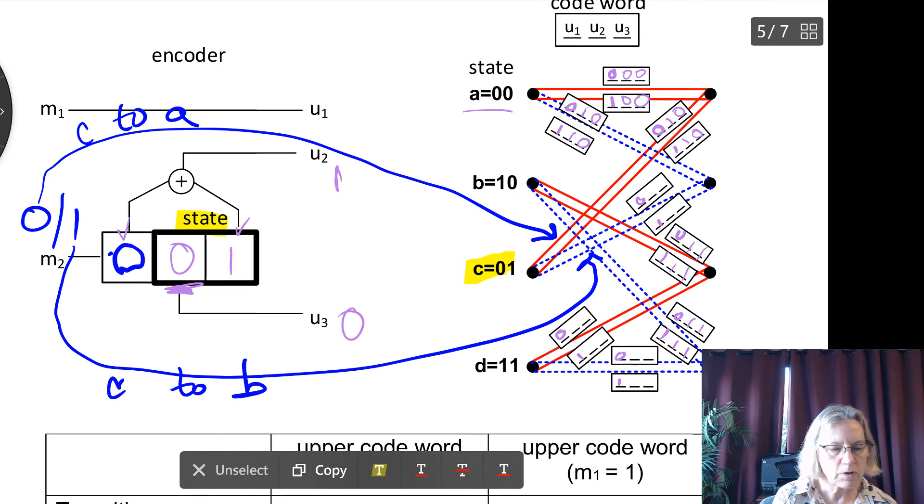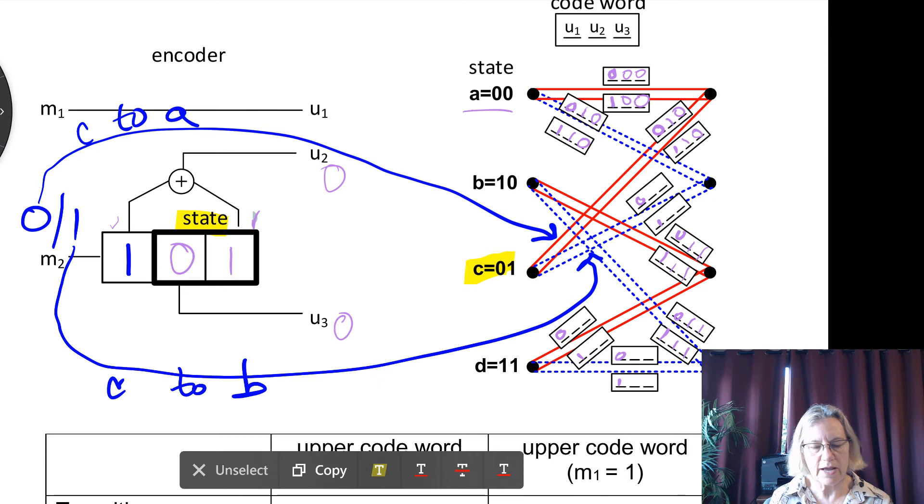Now I'm going to go back and I'm going to change the input from a 0 to a 1. So now I'm going to put in a 1 here. And, of course, we said previously that this one wouldn't change. I didn't have to erase it. It's a 0. But now I have 1 plus 1, which is going to give me a 0.